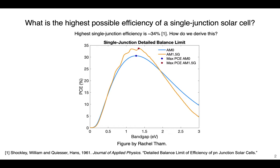If we have a solar cell, what is the thermodynamic limit that we can achieve with this device? It turns out for a single junction solar cell, the highest efficiency is about 34% — around 33.6%. And so how are people able to derive this? It's from this well-known graph, where you can see that for the AM1.5G spectra, the highest efficiency is around 34% at a bandgap of around 1.34 eV. For AM0, it's shifted a little bit to the left.